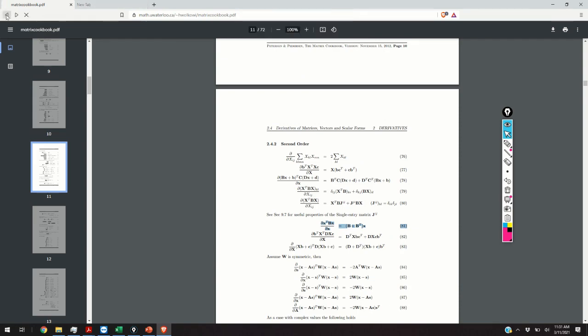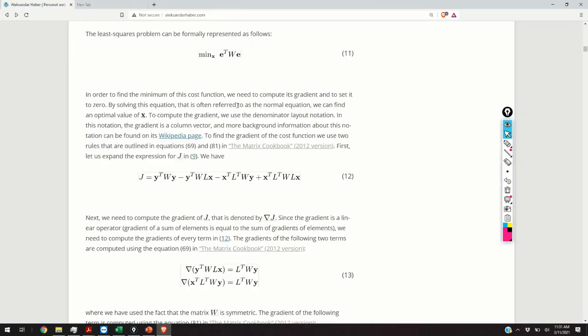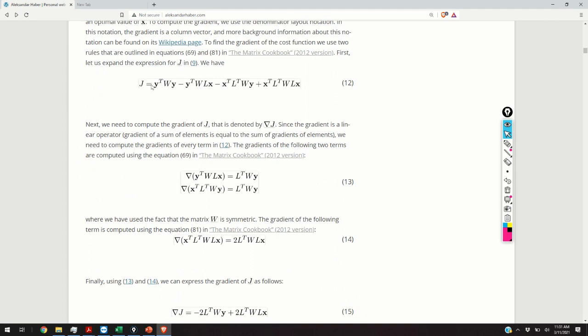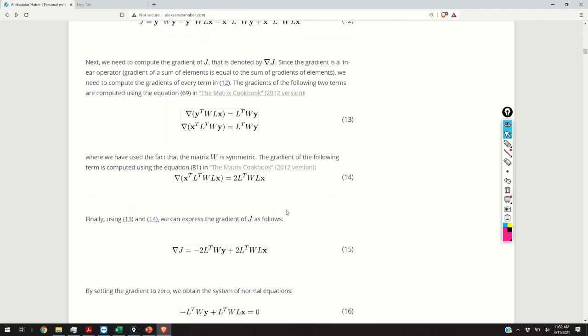So, by applying these rules to our problem, we can compute the gradient of the cost function. These two terms are computed using the rule 69, given in the matrix cookbook, and the derivative of this term over here is computed using the equation 81.